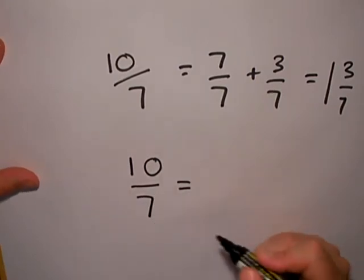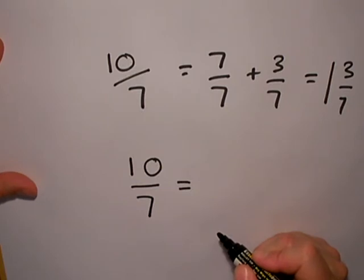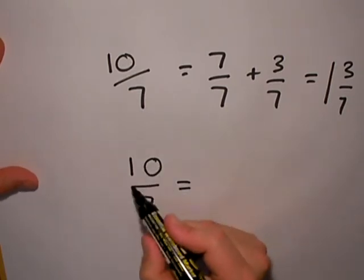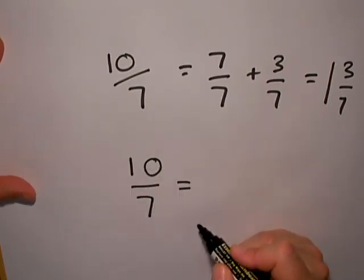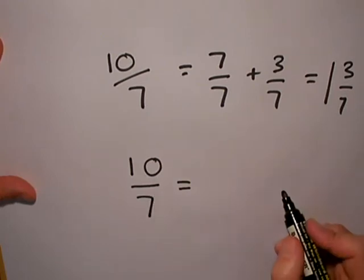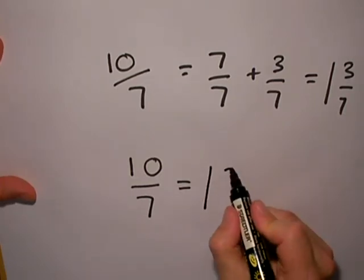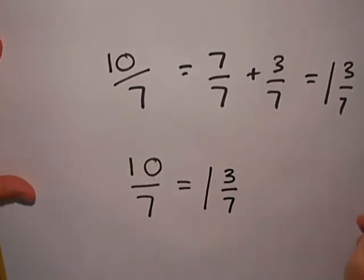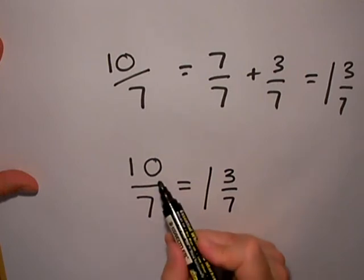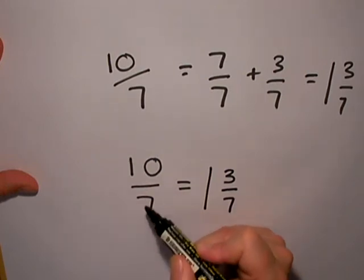I can make one whole one because I've got one lot of seven. So ten divided by seven is one whole one remainder three, 3/7 left over. So I'm doing like a division here: how many sevens go into ten?